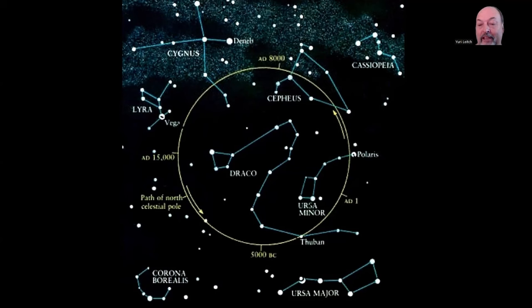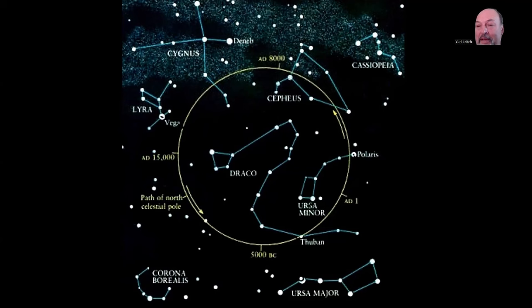When we come around to the right, you'll see there's a star called Thuban, which is part of the dragon. So in the Bronze Age, that star of the dragon was at the centre point — the pole star on the dragon's tail. Carrying on around, you'll come to 1 AD, and carrying on up, you come to Polaris at about 3 o'clock. And Polaris is the pole star at this moment in time.